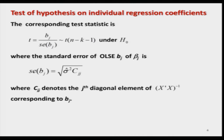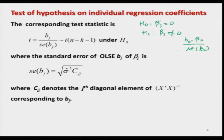Now let us construct the test of hypothesis. We are testing H₀: βⱼ = 0 versus H₁: βⱼ ≠ 0. You can recall that in simple linear regression we had constructed statistics such as (B₀ − β₀) / SE(B₀) and (B₁ − β₁) / SE(B₁), where B₀ and B₁ are the ordinary least squares estimators of the intercept and slope. Depending on whether σ² is known or unknown, we used the z or t statistics. Here we have the same setup.